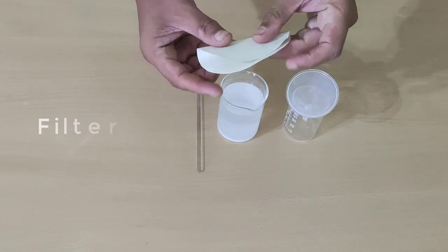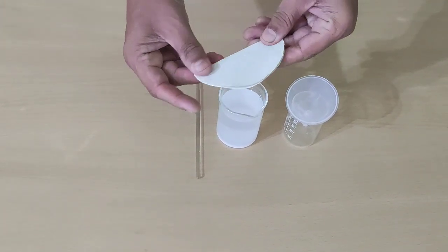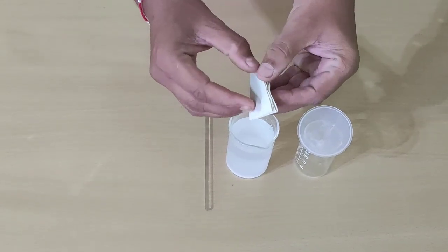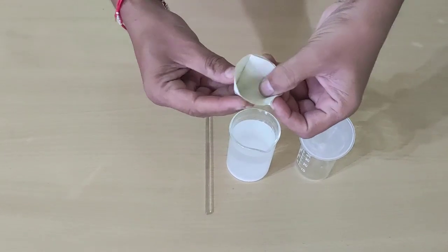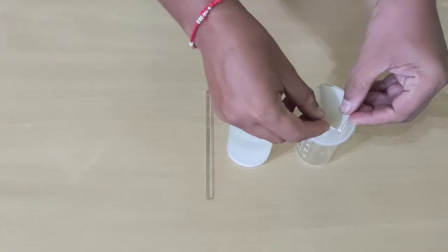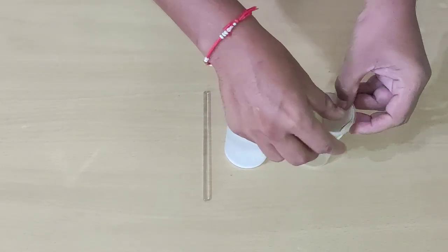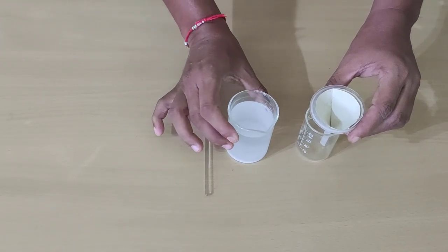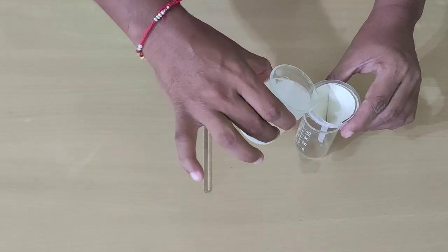We will fold it in half, one more fold in this half, and then we will get a cone shape like this. Then we will fit it in this funnel and slowly pour this solution.